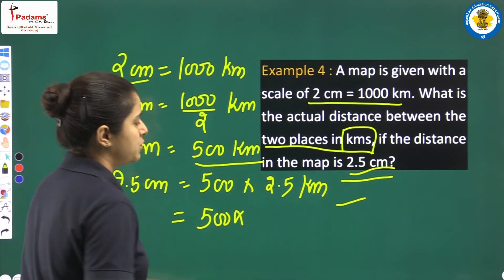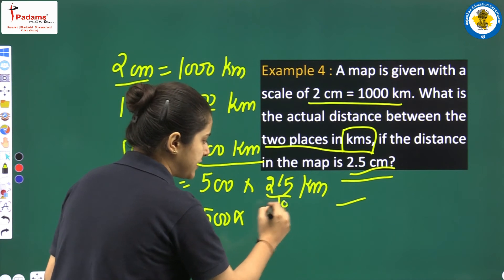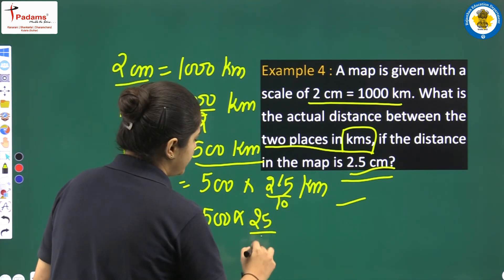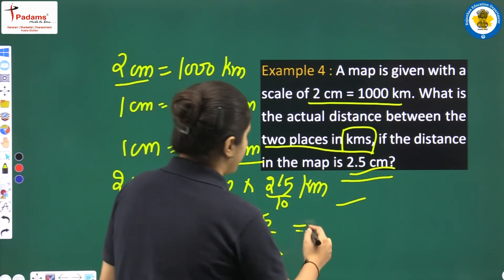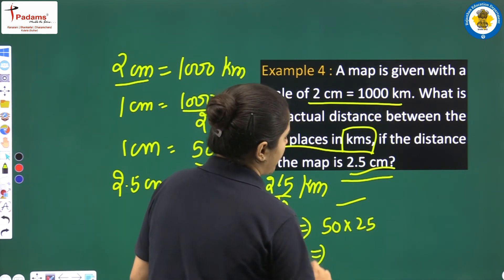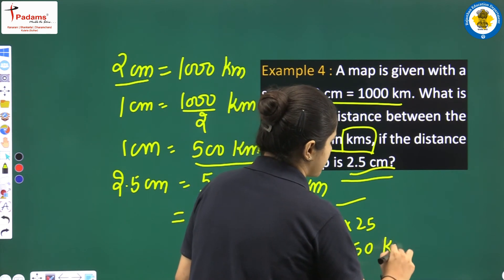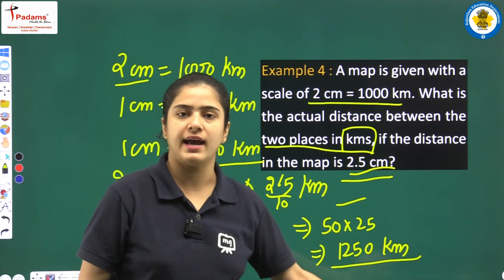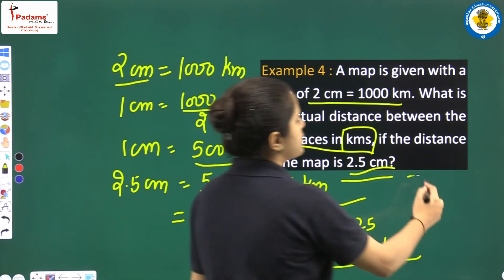500 into 2.5: removing the decimal gives 25 upon 10, so 50 into 25 equals 1,250 kilometers. This is the required answer, and the method we used is called the unitary method.